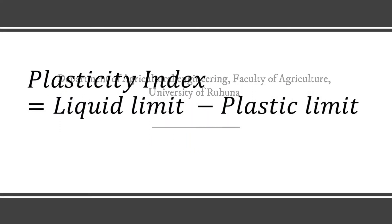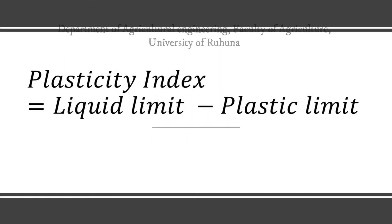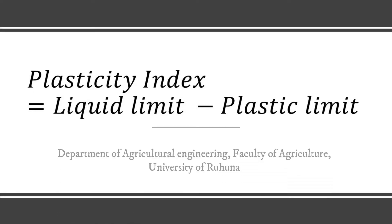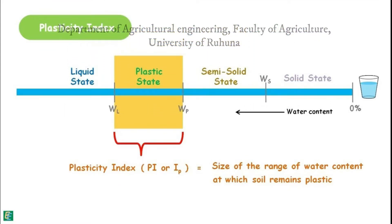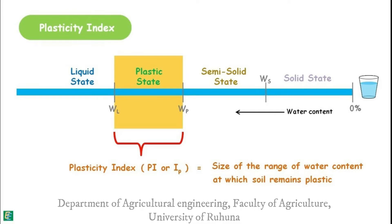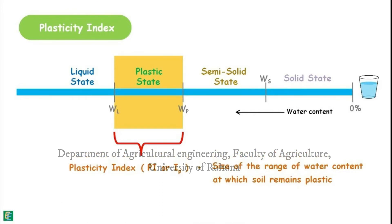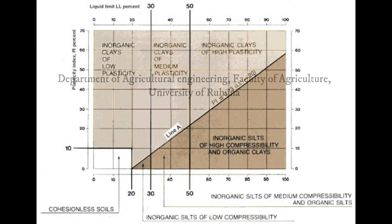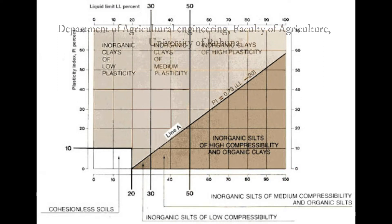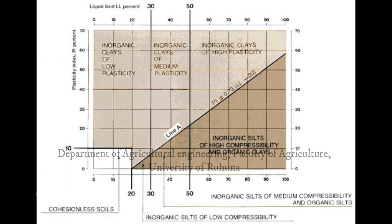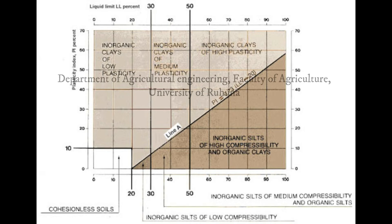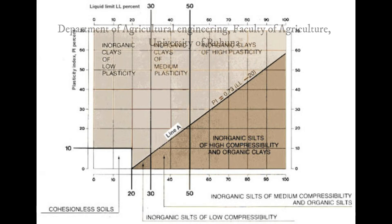The plasticity index can be numerically calculated by the difference of the liquid limit and the plastic limit. The plasticity index shows the size of the range of moisture content at which the soil remains plastic. In general, the plasticity index depends only on the amount of clay present, and it indicates the fineness of soil and its capacity to change shape without altering its volume.